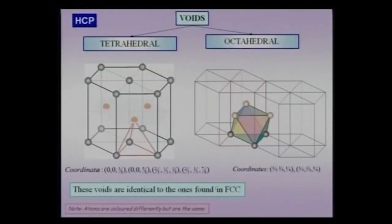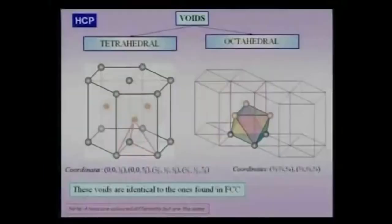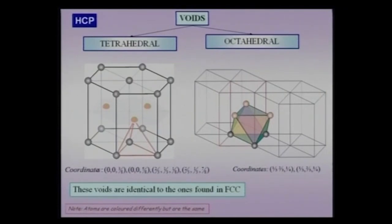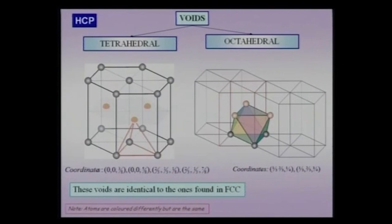Now let me take up the voids in the hexagonal close-packed crystal. The hexagonal close-packed crystal has identical voids compared to the cubic close-packed crystal — it has a regular octahedron and a regular tetrahedron as its voids. In the HCP unit cell, the tetrahedral void is formed between three atoms in the basal plane and the atom located in the mid-plane. The octahedral void positions are written as one-third, two-thirds, one-fourth, and one-third, two-thirds, three-fourths, while the tetrahedral void coordinates include positions like two-thirds, one-third, one-eighth.